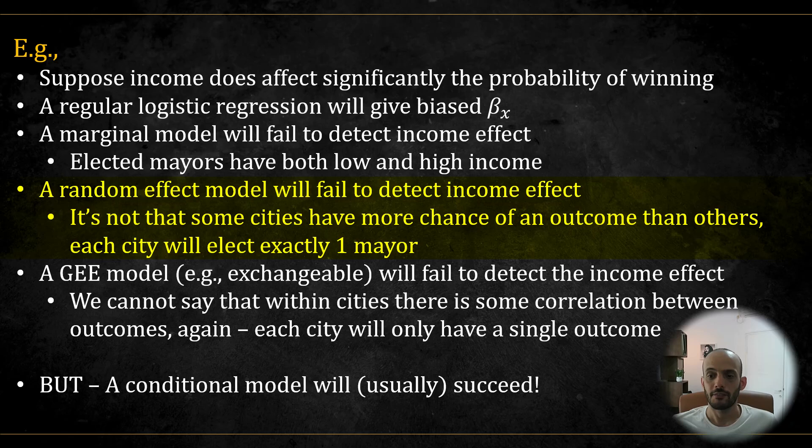Random effect model, GLMM, will fail because it's not that some cities have higher overall chance of electing a mayor than other cities. Each city still elects only a single mayor. And the same is true for GEE model. So it's not that there's within group correlation and some cities have higher chances of getting elected than other cities. No, each city still has a single outcome.